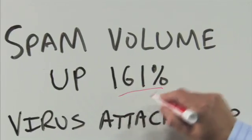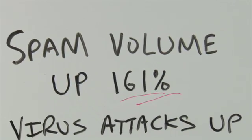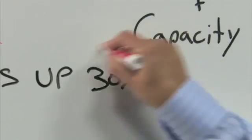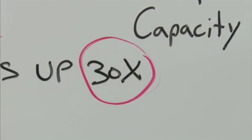At Postini, we process a lot of email, and that gives us excellent visibility and insight into the threat landscape. We've been tracking spam and email activity in 2007, and one of the things that we've seen is that spam volume is up over 161% since September of 2006. Virus volumes are up over 30 times what they were in 2006.